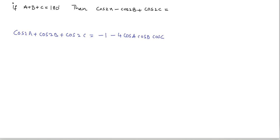Remember this logic: here all terms are cos, so it is written as minus 1 minus 4 cos a cos b cos c. And if suppose we have cos 2a plus cos 2b minus cos 2c, here the minus term is cos 2c, so write down that term as cos c.